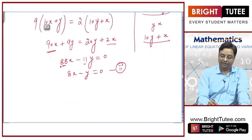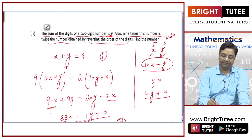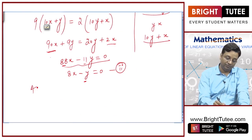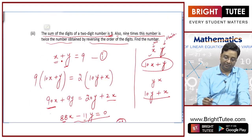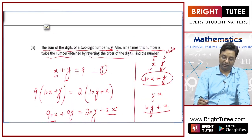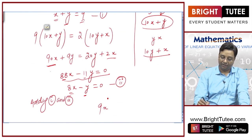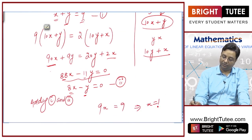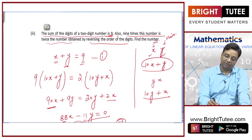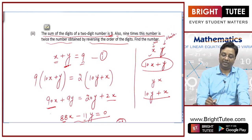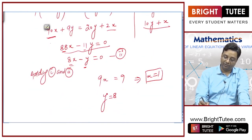By dividing that equation by 11, I have equated the coefficients of y. Now, adding equations 1 and 2: x plus 8x is 9x, and y minus y is 0, so y got eliminated. 9x equals 9, so x is equal to 1. Since x plus y equals 9, y is equal to 8.